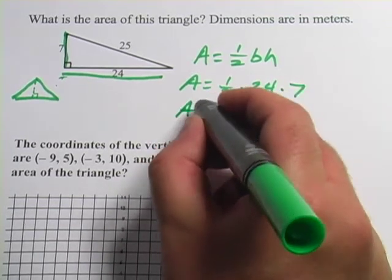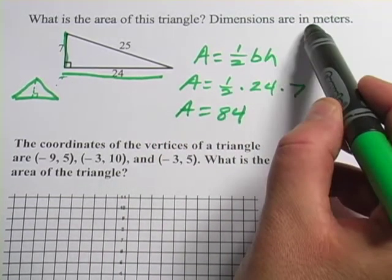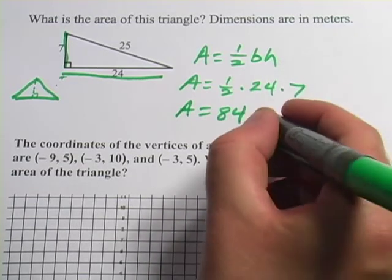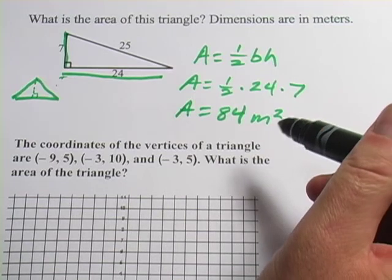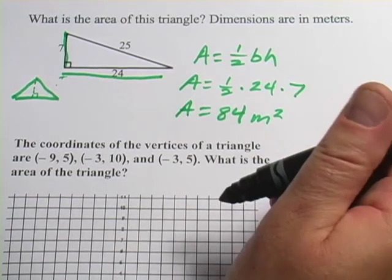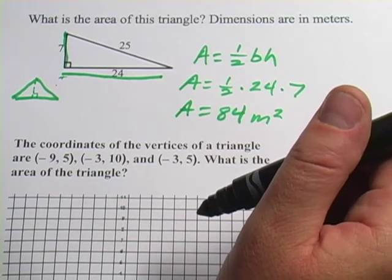However you do it, you should get 84. And then it said the dimensions were in meters, so that's going to be meters squared because this is an area problem and areas are always in square units. So that should be a little refresher on figuring out the area of a triangle.